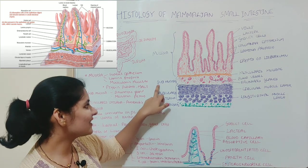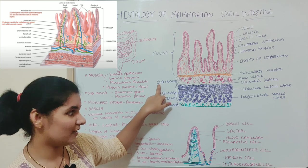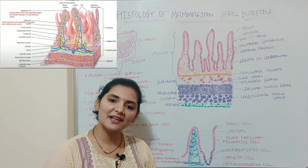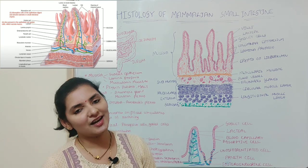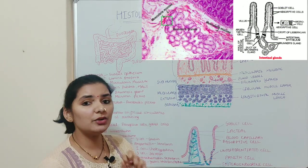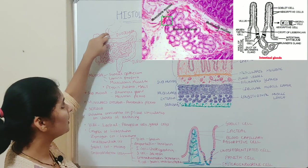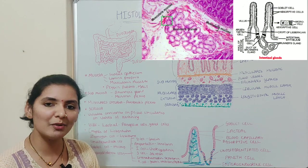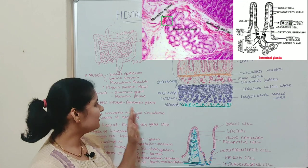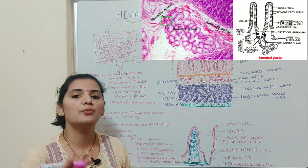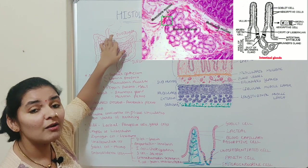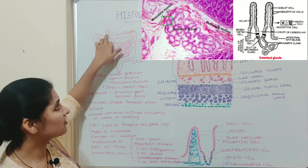Inner to muscularis externa is the submucosa layer. As you can see in this diagram, this submucosa layer is made up of loosely arranged connective tissue with larger blood vessels and lymphatics. The submucosa of the duodenum region consists of a special type of gland known as Brunner's glands, or duodenal glands, and these Brunner's glands secrete mucus.